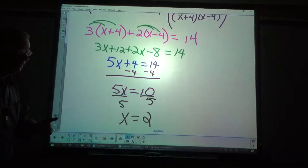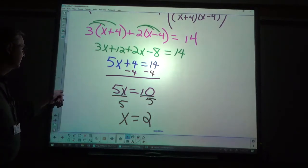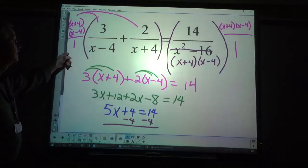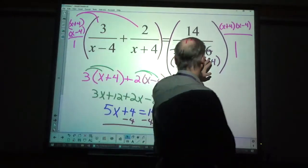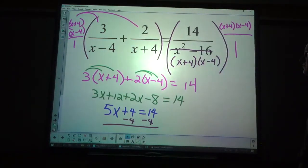Again, you want to make sure no extraneous solutions. So, I'm going to take that 2. 2 minus 4. No problem. 2 plus 4. No problem. And, same here. 2 squared minus 16. No problem.